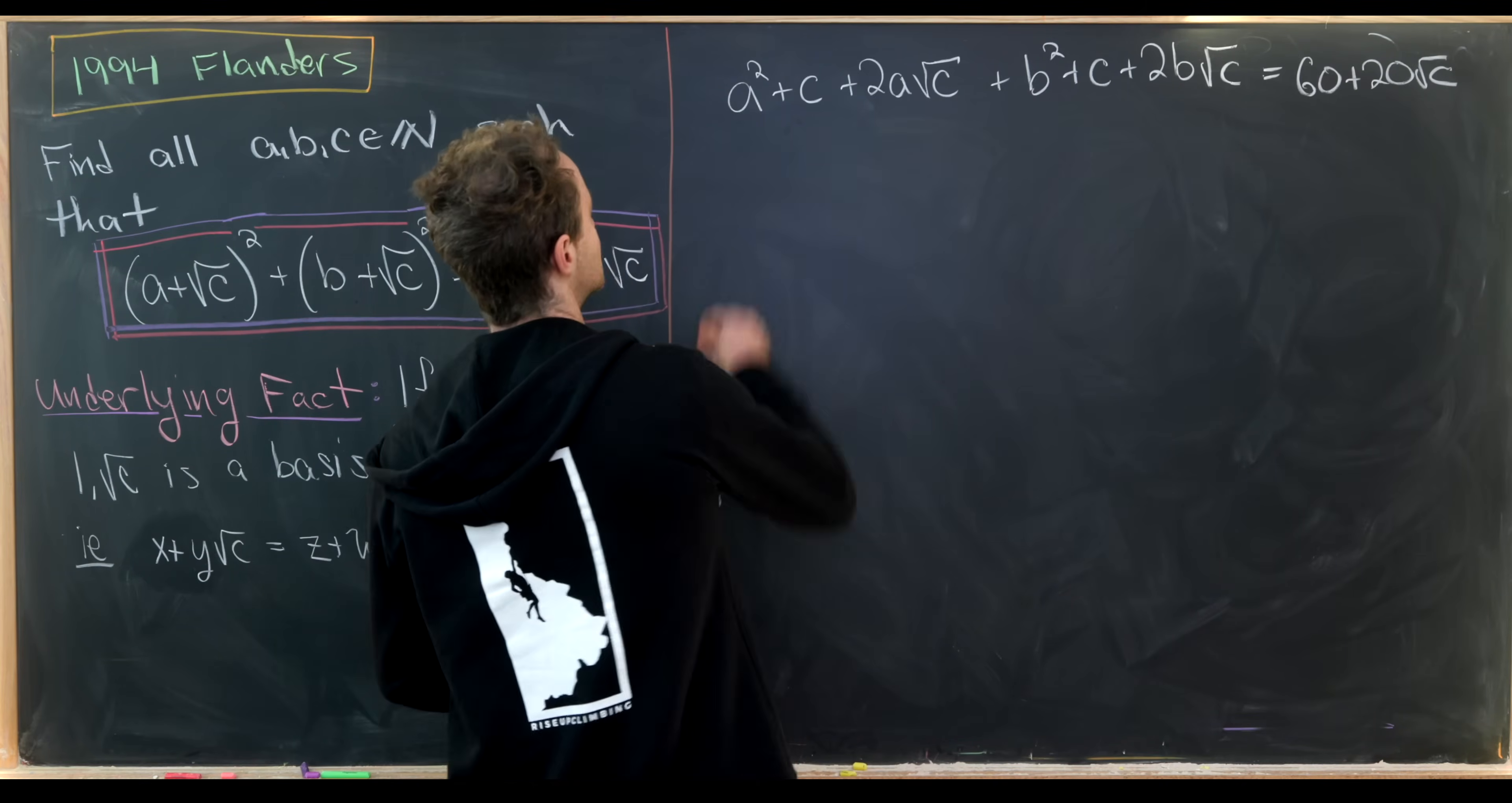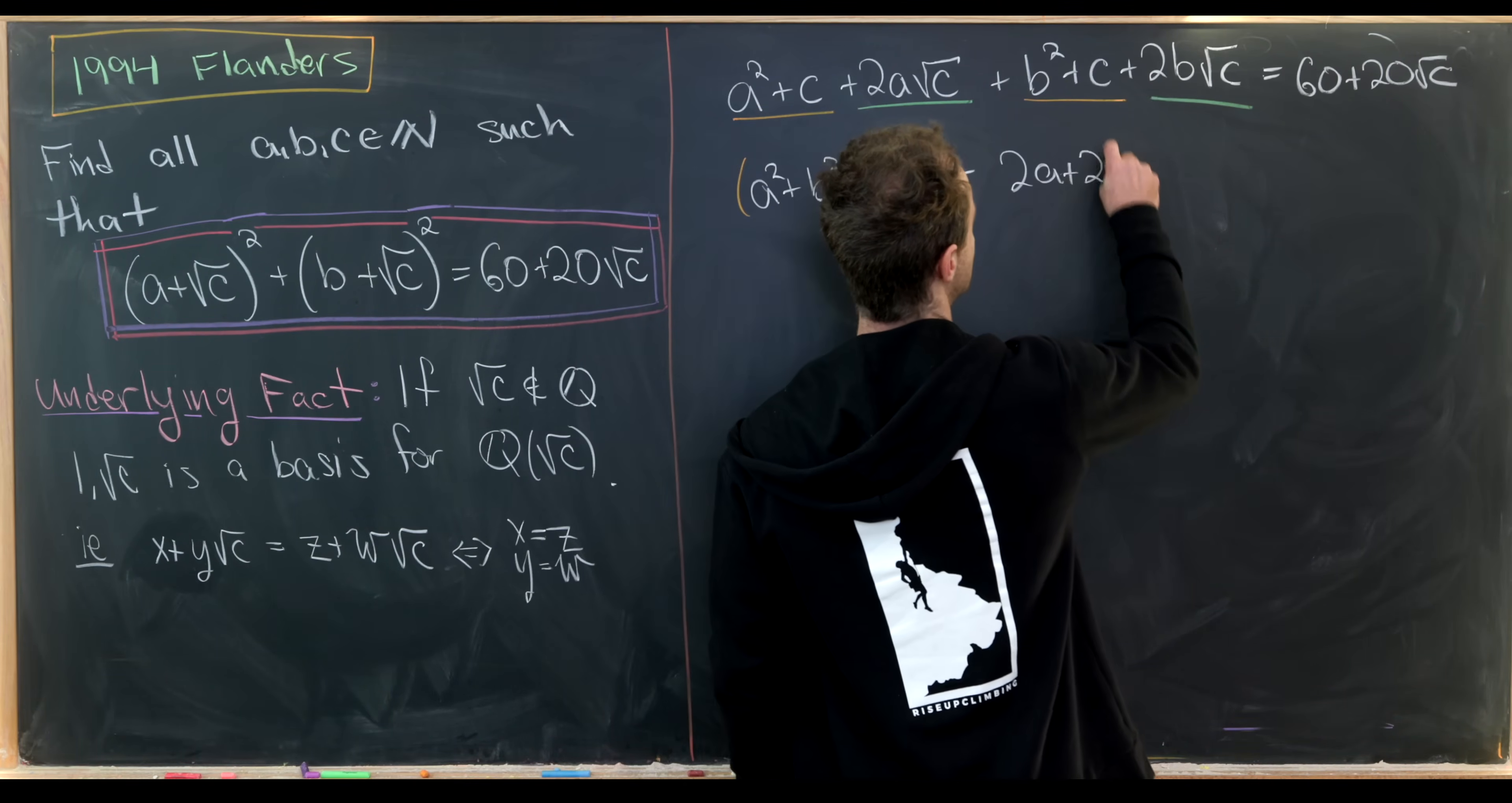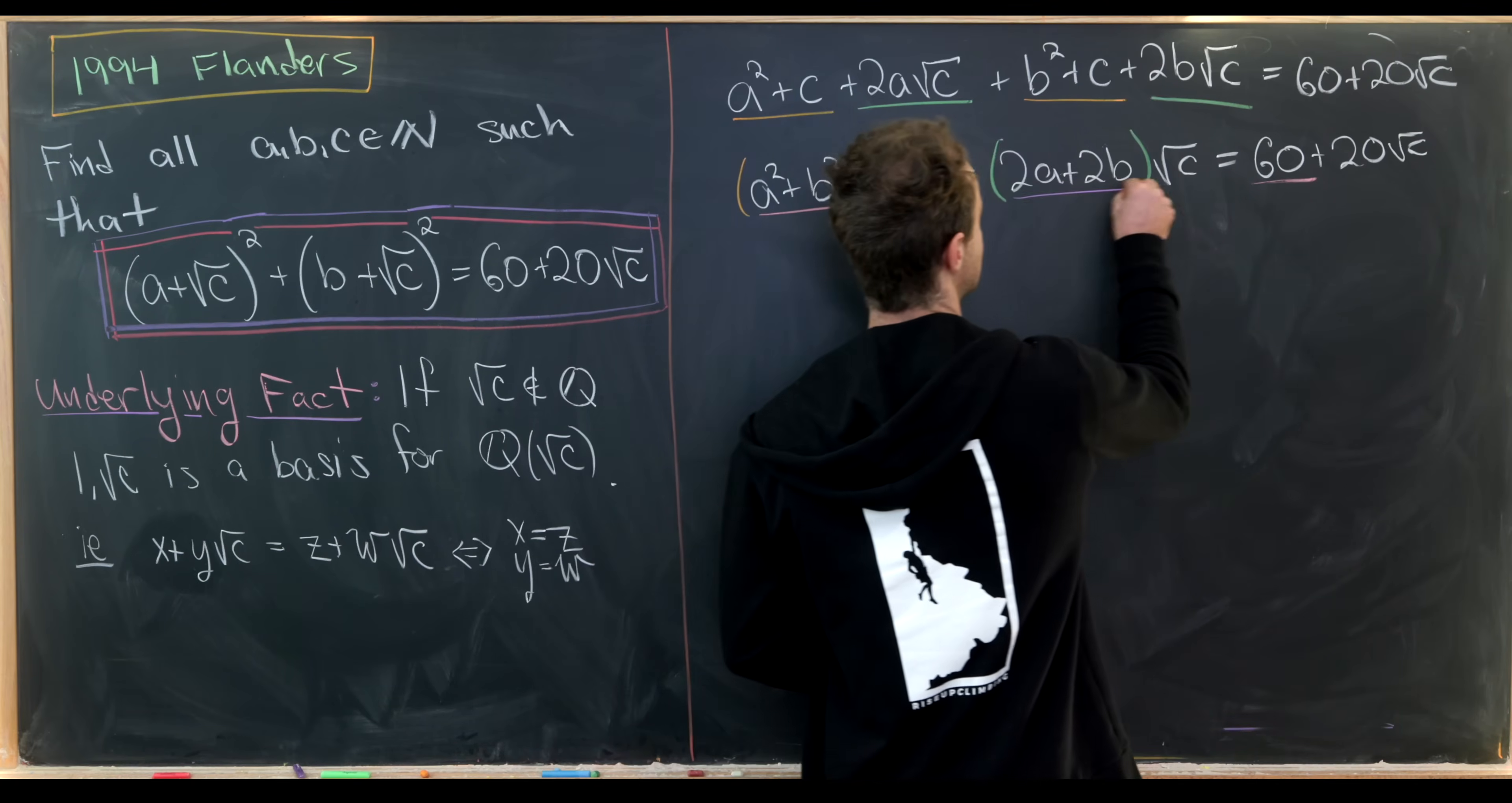Now let's combine some things. So let's write these integer terms next to each other, and we'll write these multiples of square root of c next to each other as well. That'll give me something like this. We'll have a squared plus b squared plus 2 times c, that's everything from the orange underline, plus 2a plus 2b all times the square root of c. That comes from the green underline equals 60 plus 20 root c. So that's just from rewriting this above equation. But now what I can do is I can equate the constant terms and the square root of c terms. So that builds me a system of equations.